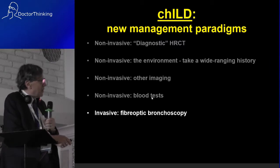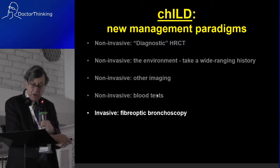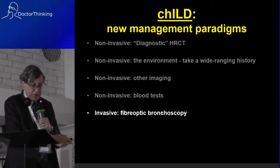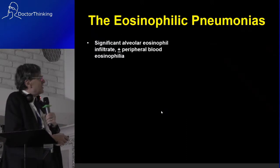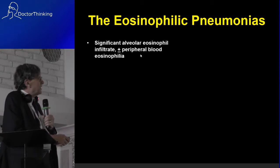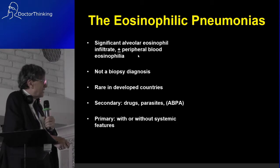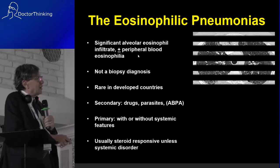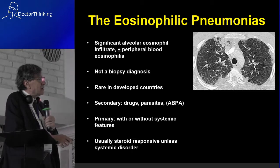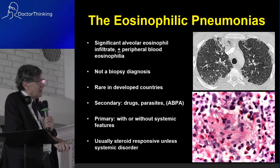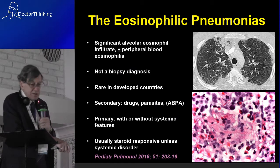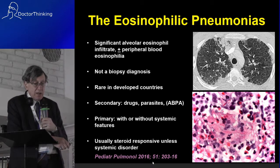What about the role of fiber optic bronchoscopy? I only do a bronchoscopy if I think it is likely to reach a diagnosis without a biopsy. The eosinophilic pneumonias is one such condition — significant eosinophilic infiltrates, which you can diagnose on lavage. It is rare in developed countries and usually secondary to drugs or parasites, may be a primary condition, and is usually steroid responsive. Here is a typical CT scan, and on the lavage you can see a lot of eosinophils.